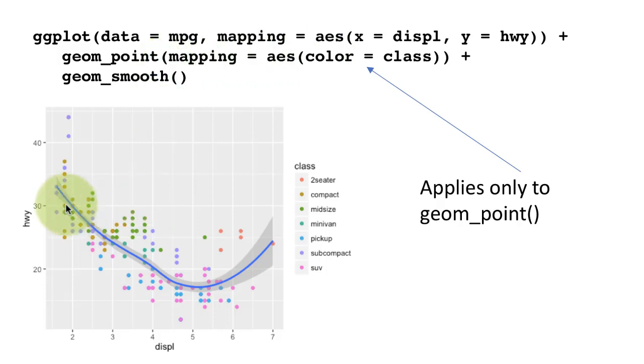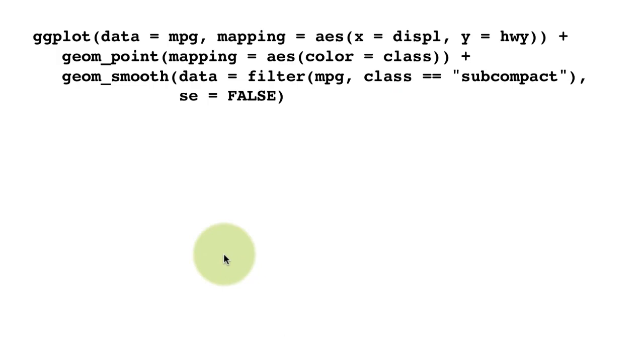So we still get only one smooth line because as far as the smooth layer is concerned, only X and Y have been mapped. We have not mapped anything else. So we are telling it go with the whole data. So one smooth line.